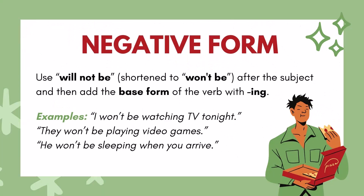Negative form: Use 'will not be' (shortened to 'won't be') after the subject, then add the base form of the verb with '-ing.' Examples: 'I won't be watching TV tonight.' 'They won't be playing video games.' 'They won't be sleeping when you arrive.'